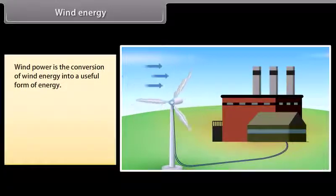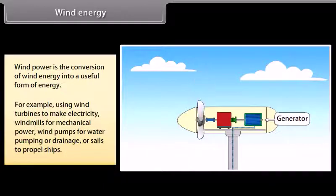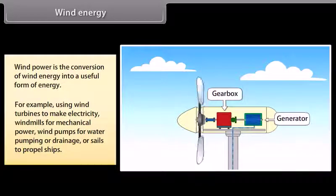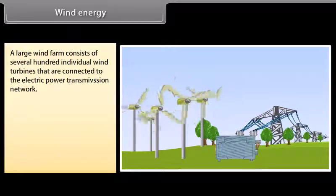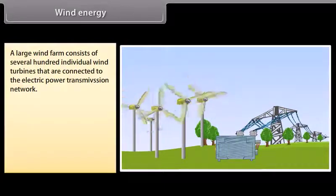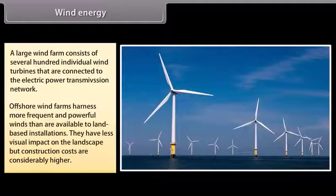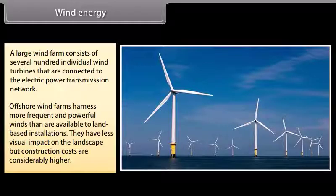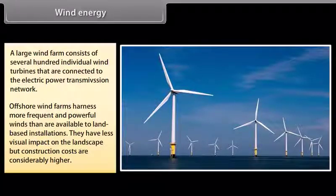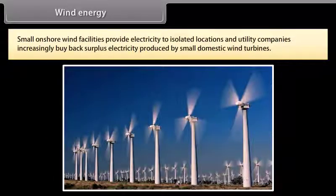Wind energy. Wind power is the conversion of wind energy into a useful form of energy using wind turbines to make electricity, windmills for mechanical power, wind pumps for water pumping or drainage, or sails to propel ships. A large wind farm consists of several hundred individual wind turbines that are connected to the electric power transmission network. Offshore wind farms harness more frequent and powerful winds than are available to land-based installations. They have less visual impact on the landscape, but construction costs are considerably higher. Small onshore wind facilities provide electricity to isolated locations, and utility companies increasingly buy back surplus electricity produced by small domestic wind turbines.